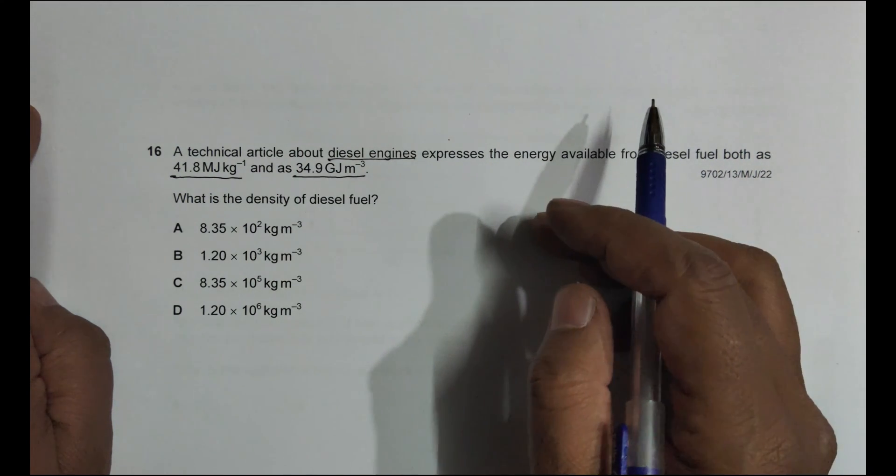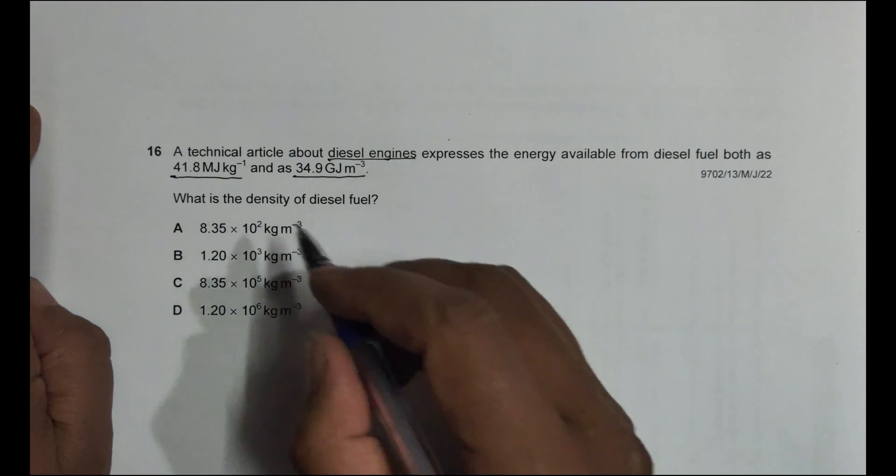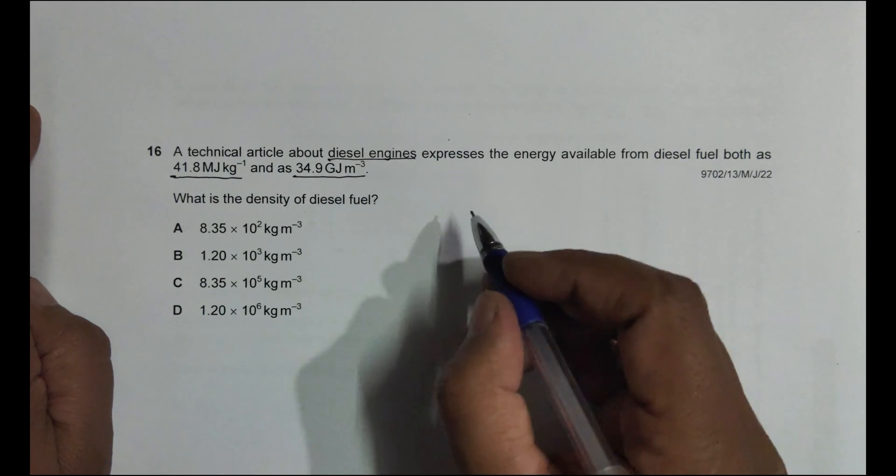So when we divide mass by volume, then we get the density. For that, the unity method helps a lot.